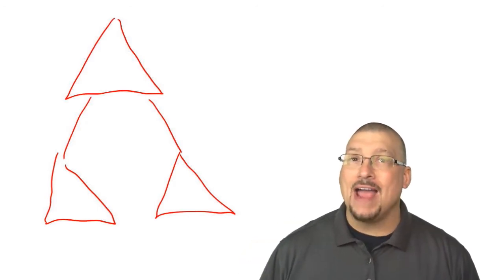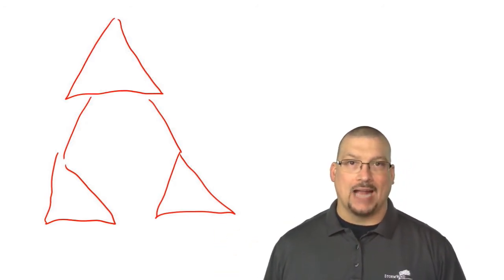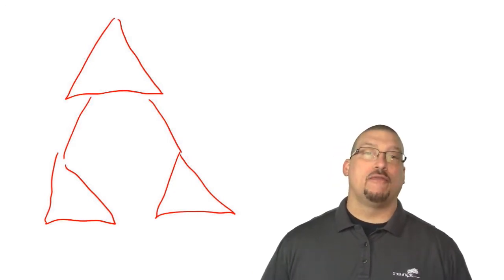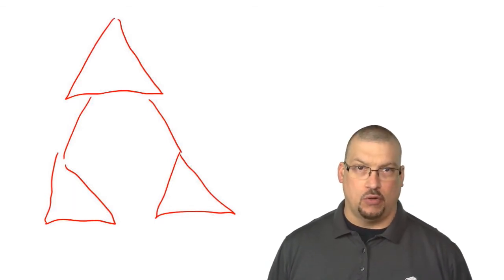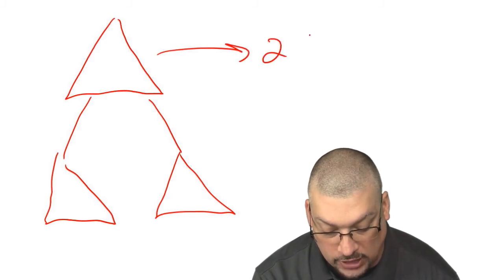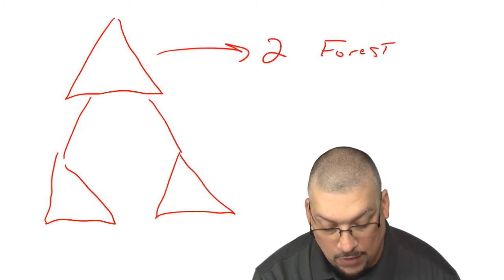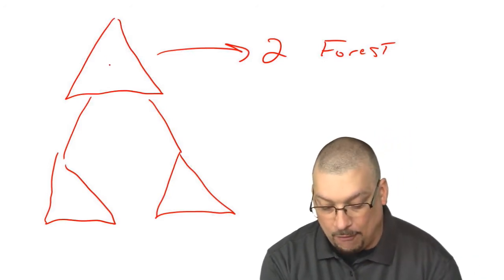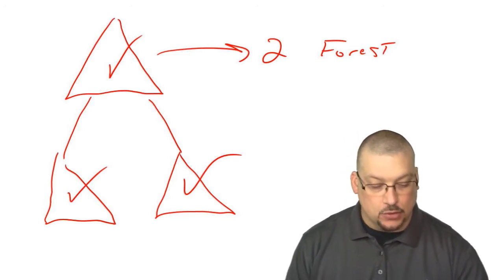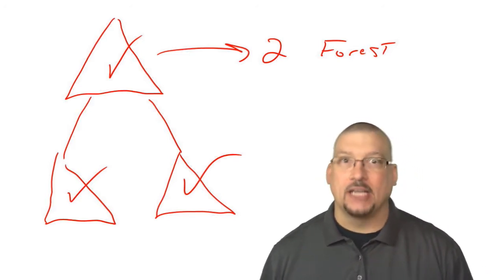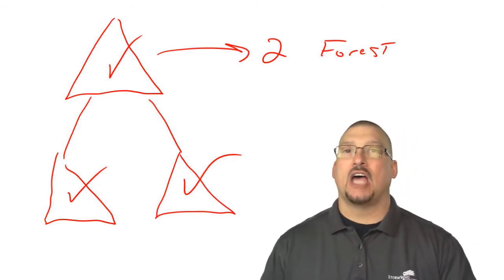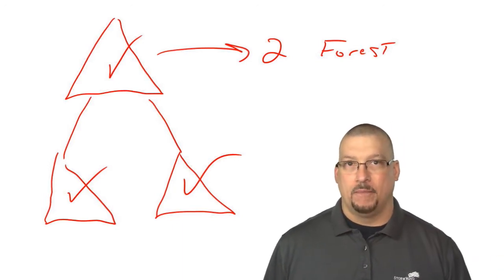As I said, there are five roles that are part of Active Directory. Two of them are forest-based, which means for the entire forest there's only going to be two servers holding these roles. Then there are three domain-based roles, which means every single one of these domains is going to have those three roles. Five roles total - two for the entire forest, three in every single domain.